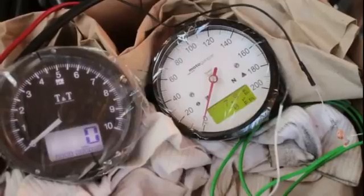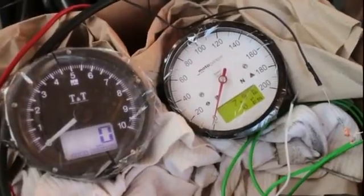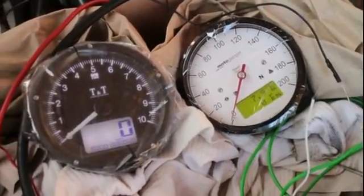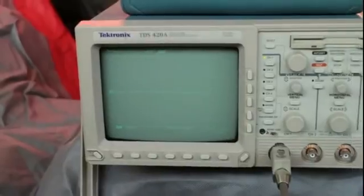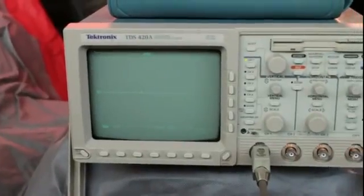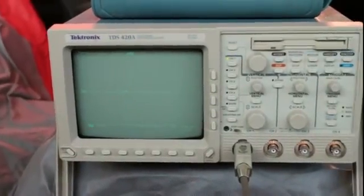On the right hand you see a MotoGadget. It acts as a reference instrument to see what's running wrong with the TNT. I have also prepared an oscilloscope to catch the signals from the coil to understand what's wrong.